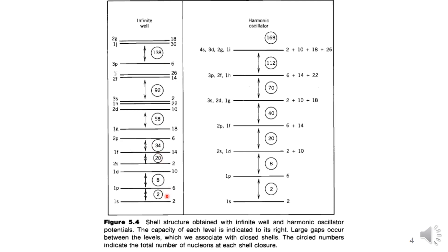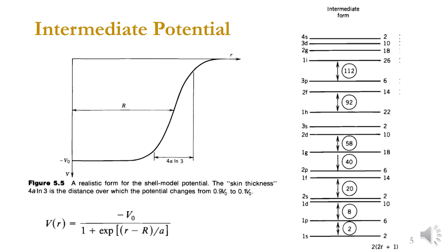For the infinite well model, the first three magic numbers work: 2, 8, and 20 are reproduced. The next magic numbers are 28, 50, 82, and above. However, both the infinite well model and the harmonic oscillator model only work correctly up to magic number 20; above that, they fail to reproduce the observed shell completeness.